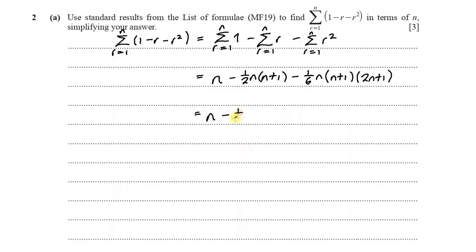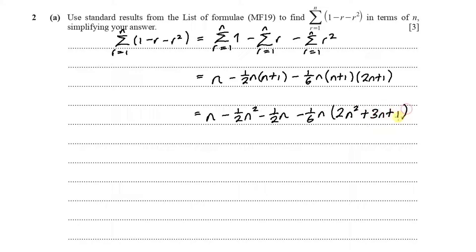We can simplify: this gives us n minus half n squared minus half n, then minus — expanding the brackets (n+1)(2n+1) gives 2n squared plus 3n plus 1 — so minus one-sixth n times (2n squared plus 3n plus 1).